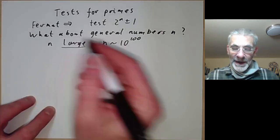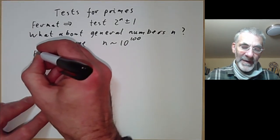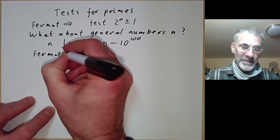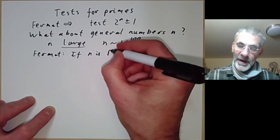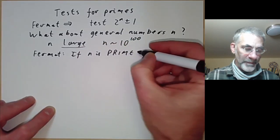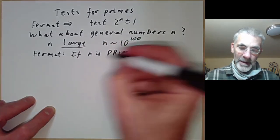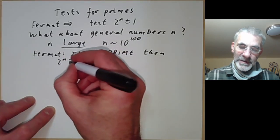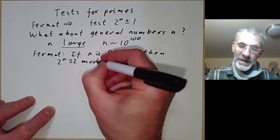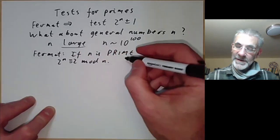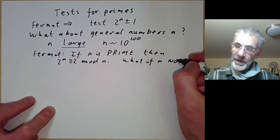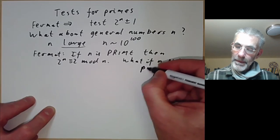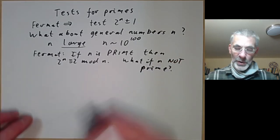Well, we can get some information by using Fermat's theorem. So Fermat, you remember, showed that if n is prime then 2 to the n is congruent to 2 modulo n. And we can ask, what if n is not prime?